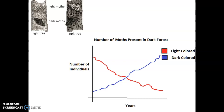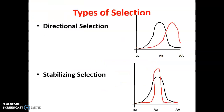There are three different kinds of selection. Directional selection is where one phenotype is not advantageous, so the population shifts toward being either homozygous dominant (AA) or homozygous recessive (aa). Stabilizing selection is where it's not good to be homozygous on either end — that's sometimes called a heterozygous advantage — so we see the middle of the distribution go up.